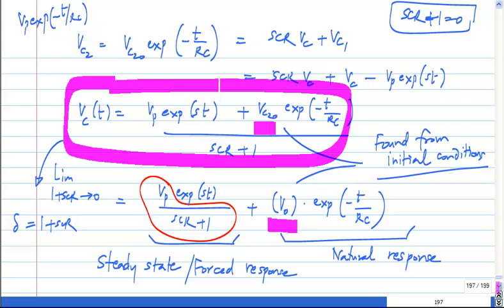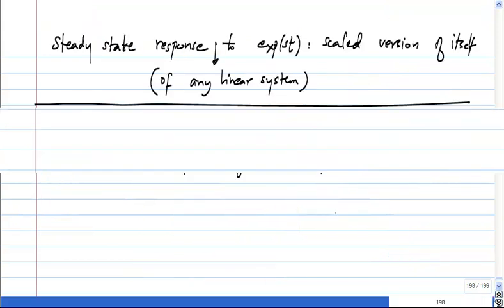The natural response also scales with the initial condition. But what you cannot do is for some initial condition, apply one input and find the total response, then with the other input alone find the total response - if you add up you will get the wrong result. So the steady state response itself follows superposition and the natural response itself scales with the initial condition. So you try it out and see.